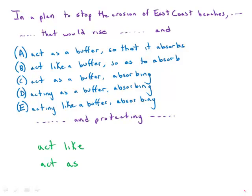This sentence about erosion of East Coast beaches features a double dose of parallel structure. Parallel structure is one of the GMAT's favorite constructions to explore on sentence corrections.